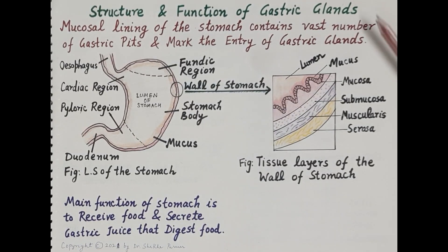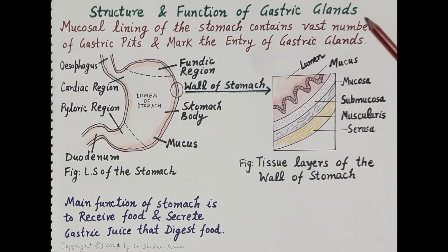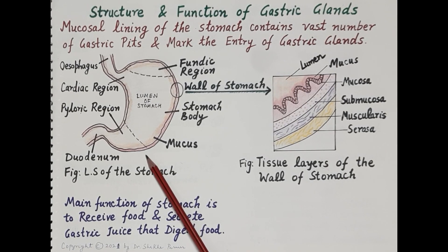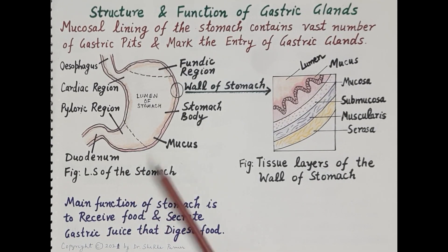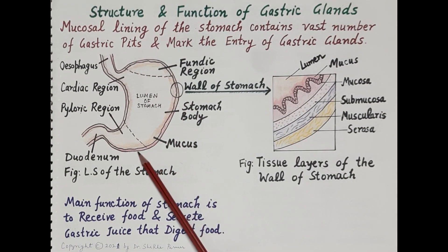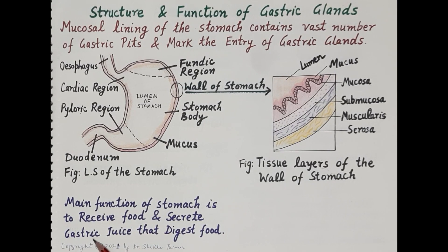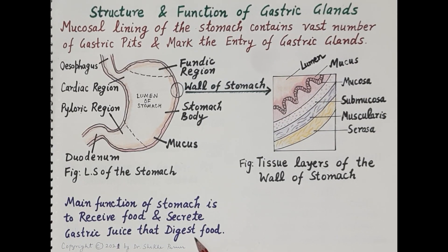Hello students, today we will study the structure and function of gastric glands. This diagram shows a longitudinal section of the stomach. The gastric glands are located in the wall of the stomach, shown here in pink. The main function of the stomach is to receive food and secrete gastric juice, which is produced by the gastric glands and digests the food.